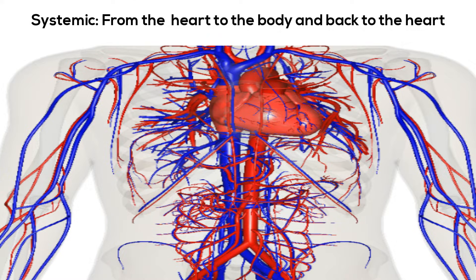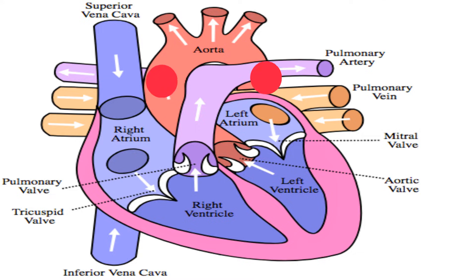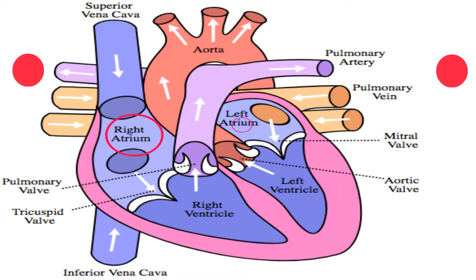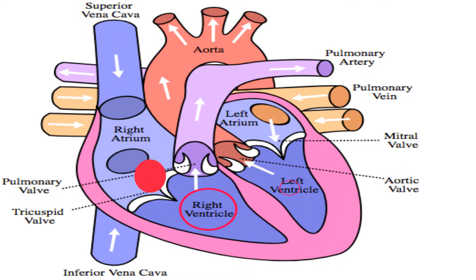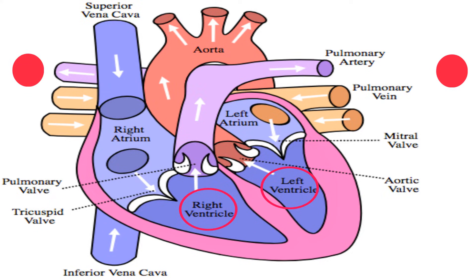Your heart has four chambers that are used to pump blood throughout your body: two atria, which are the upper chambers, and two ventricles, which are the lower chambers. The left and right side of the heart is divided by the septum.